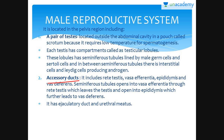The pair of testis are located outside the abdominal cavity in a pouch called scrotum. Please make sure that you note the spellings in the correct way. It is located outside the abdominal cavity in a pouch called scrotum because it requires low temperature for spermatogenesis.